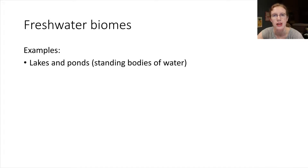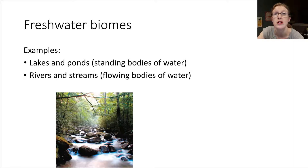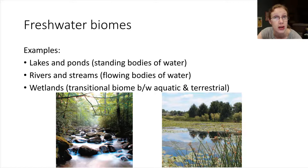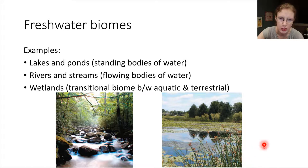Examples of freshwater biomes include things like lakes and ponds — standing bodies of water that are holding still. Other freshwater biomes include rivers and streams, where the water is moving. We could also have wetlands, which are biomes that connect aquatic habitats with terrestrial habitats — kind of at the interface of those two. Here's a picture of a wetland.